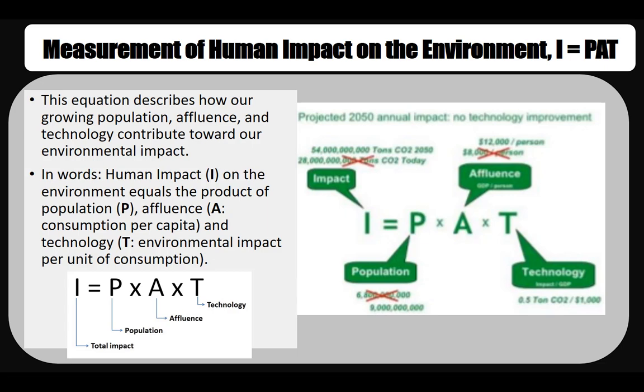Since the rise of industrial societies, human population has been increasing exponentially, and as a result, total environmental impact has also been increasing. The variable A in the I=PAT equation stands for affluence — it represents the average consumption of each person in the population. As the consumption of each person increases, the total environmental impact increases as well.